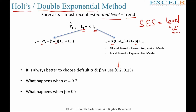By default, the alpha value should be 0.2 and the beta value should be 0.15. If alpha equals 0, then the level becomes the previous level plus the previous trend value. And if beta equals 0, that trend component becomes 0, so the trend value equals the previous trend value.